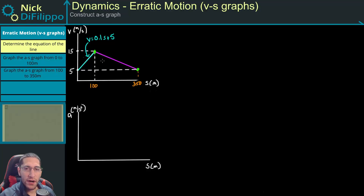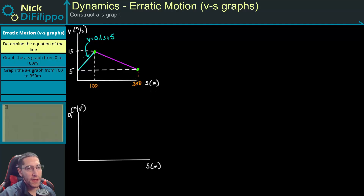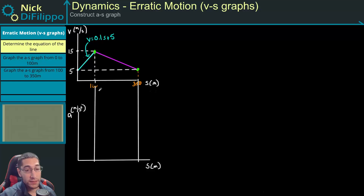In this problem we are given a VS chart and what we are asked to do is draw the corresponding AS chart. The first thing we should recognize about this VS chart is we have two different functions for velocity. From 0 to 100 meters we have a velocity given by 0.1S plus 5, and from 100 to 350 meters we have a velocity function we need to figure out.